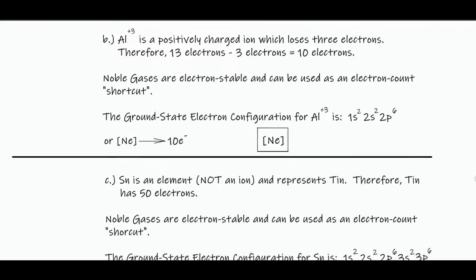Next, we have aluminum ion that's positively charged. So it's Al plus 3. So actually, it's going to lose 3 electrons. So we have to solve for 10 electrons. So again, 1s2, 2s2, 2p6, which becomes neon. So you can enter in neon for the correct answer.